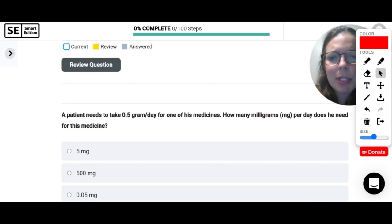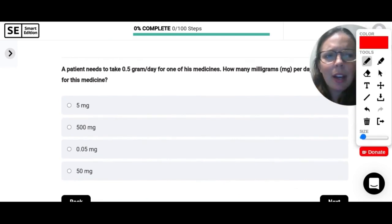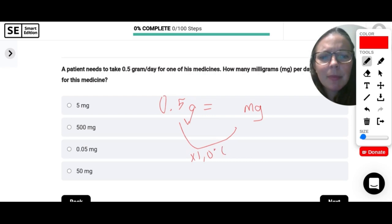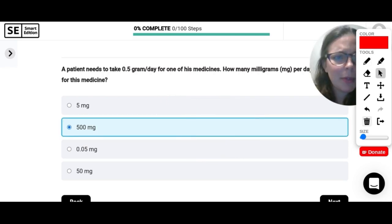A patient needs to take half a gram a day for one of his medicines. How many milligrams per day does he need for his medicine? So half a gram is equal to how many milligrams? So we talked a little bit about this in the beginning, I think, where there are 1,000 milligrams in a gram. So we can just multiply this by 1,000 and you'll get 500 milligrams.